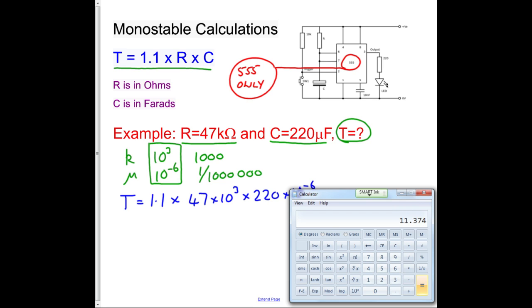And we get an answer of 11.374. But I'm not going to write 11.374 because that's too precise, given our components are only precise to 5%. So I'm going to write 11.4 seconds, and that's the time period of this monostable.